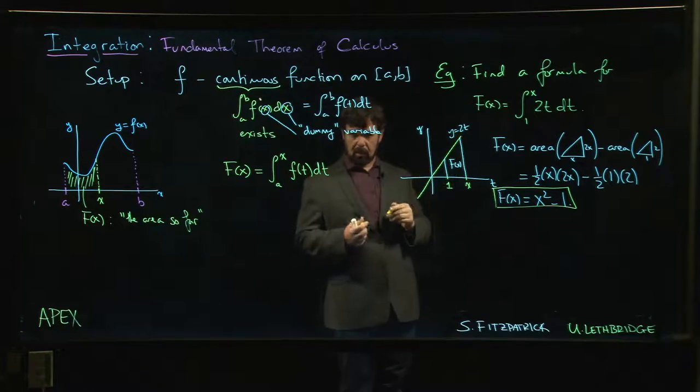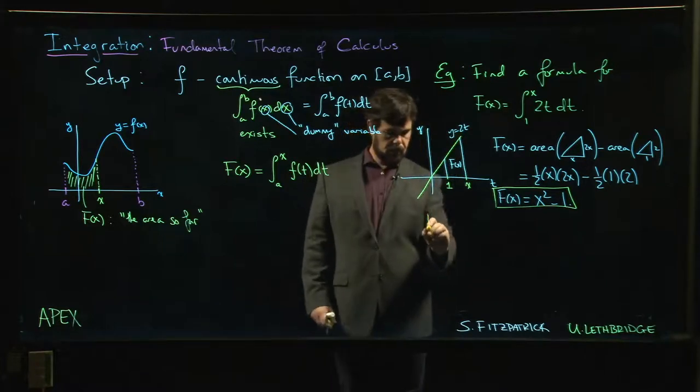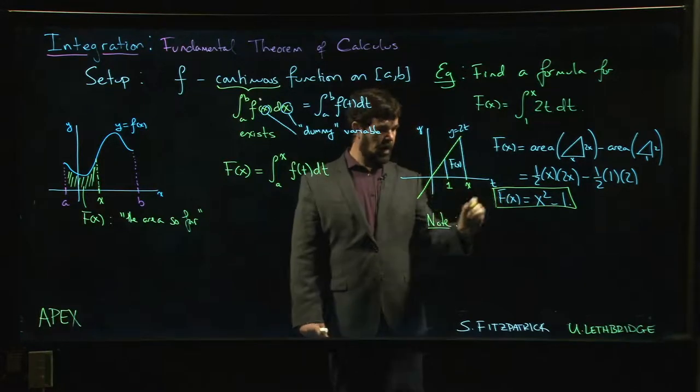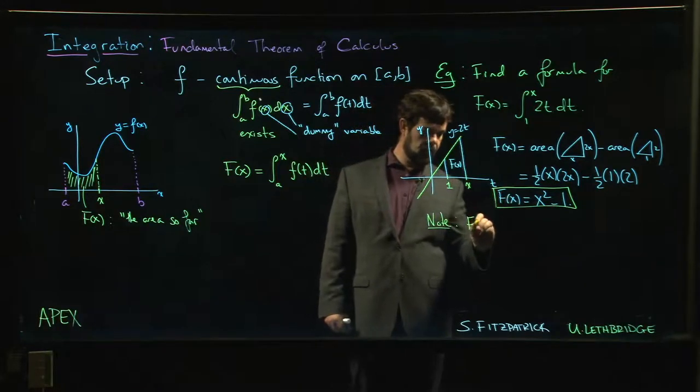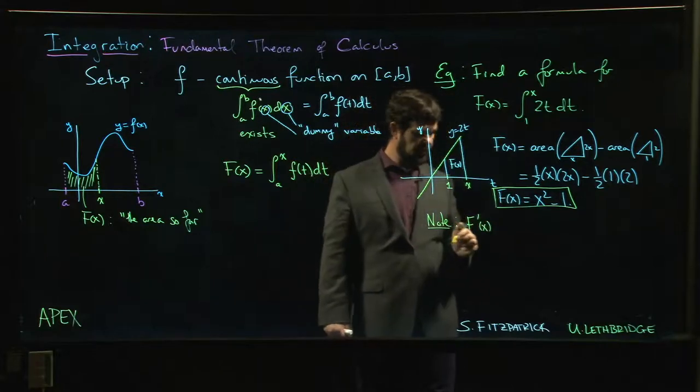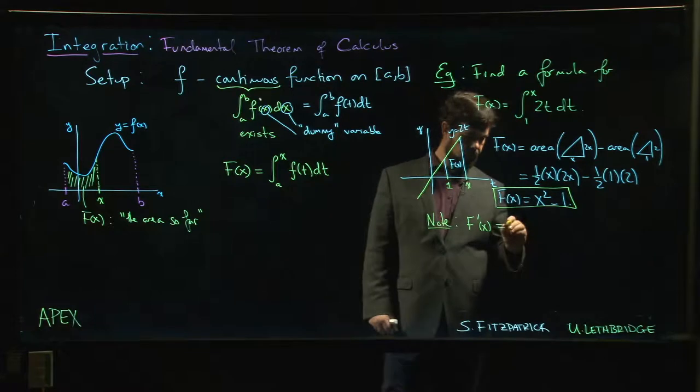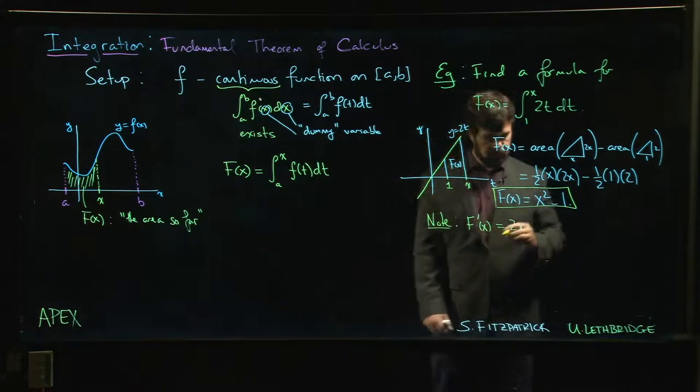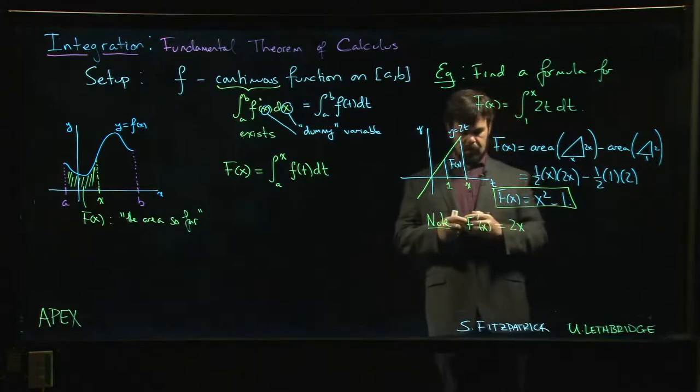Notice what happens when you take the derivative. f prime of x is 2x, using power rule here. Derivative of a constant is 0.